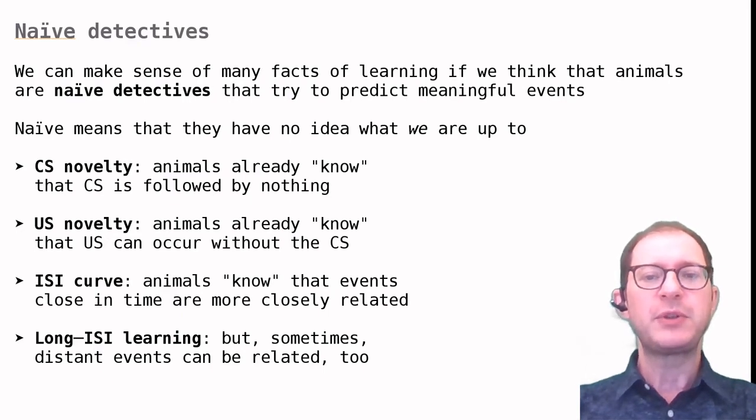For now, let's try to interpret what we have seen in this lesson from the naive detective point of view. For example, when a CS is not new, the animal already has some ideas about it. If we play a sound and there is no meaningful consequence, the detective learns that the sound is not very important.